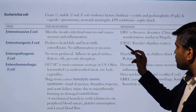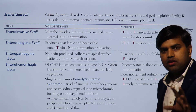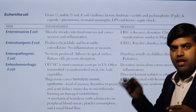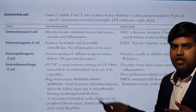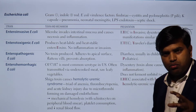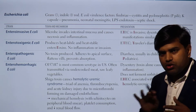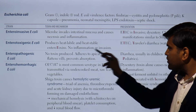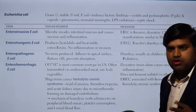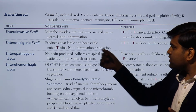Enterotoxigenic E. coli, abbreviated ETEC, produces heat-labile and heat-stable enterotoxins with no inflammation and no invasion. It is toxin-mediated. The heat-labile toxin works by activating adenylyl cyclase, increasing cyclic AMP, which opens water and electrolyte channels, causing efflux from the cell into the lumen — resulting in diarrhea. This mechanism is the same as we discussed in the exotoxin section.